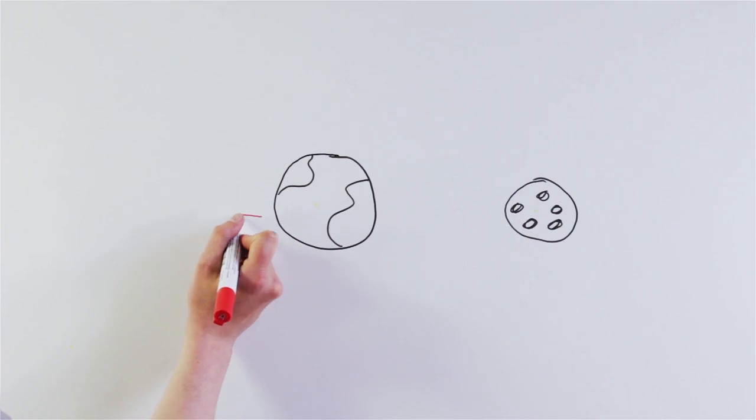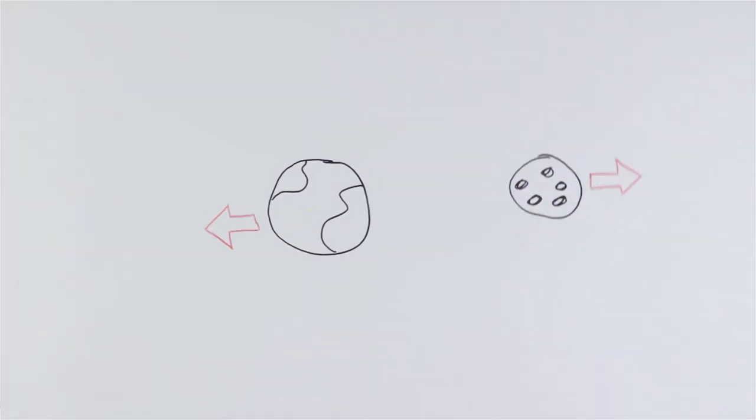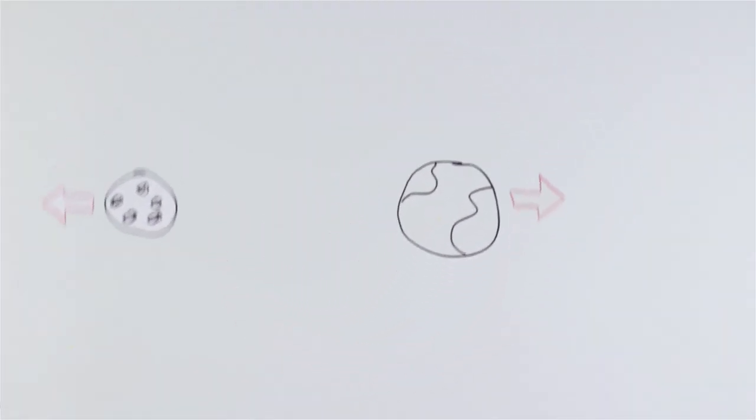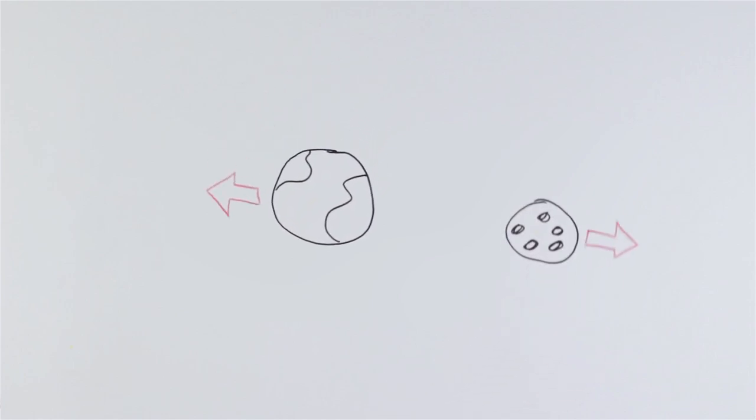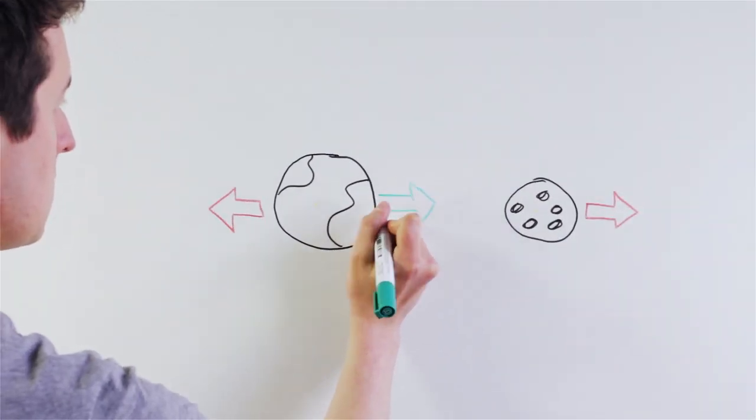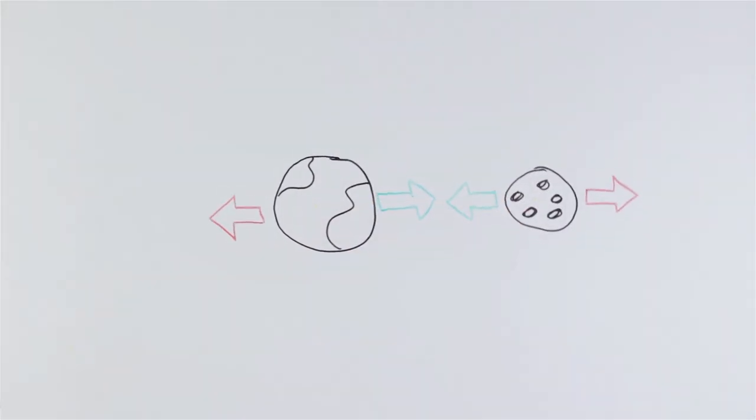This orbit is enough to generate strong centrifugal forces that would pull the two dancers apart. However, the attraction of gravity between them balances the centrifugal force, and holds them together in their spin.